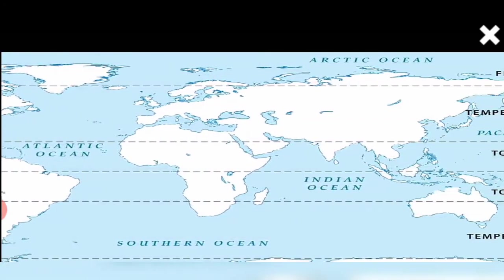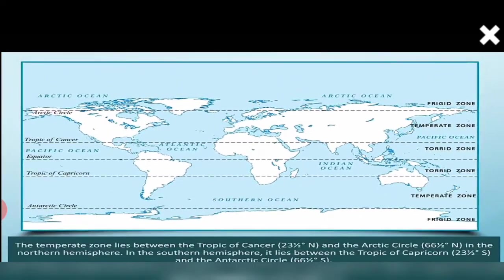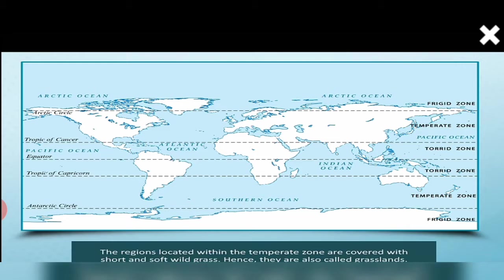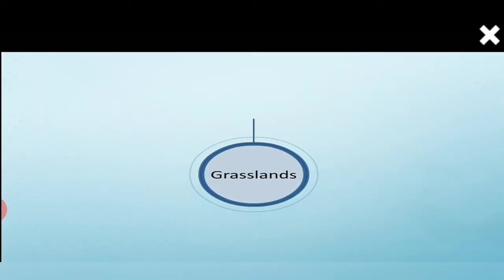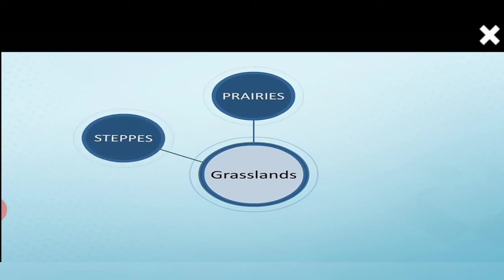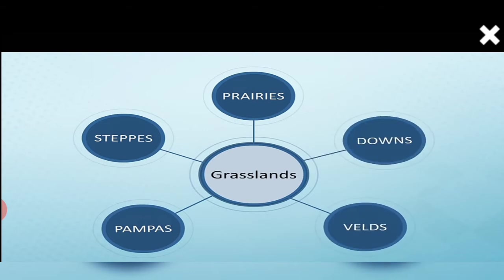Do you know where the temperate zone is located? The temperate zone lies between the Tropic of Cancer and the Arctic Circle in the northern hemisphere. In the southern hemisphere it lies between the Tropic of Capricorn and the Antarctic Circle. The regions located within the temperate zone are covered with short and soft wild grass — hence they are also called grasslands. The grasslands are known by different names in different continents: prairies in North America, steppes in Russia, pampas in South America, veld in South Africa and downs in Australia.